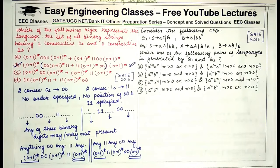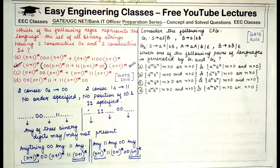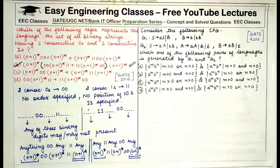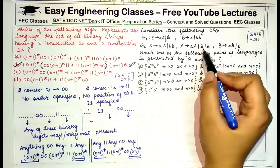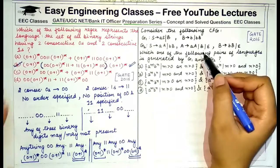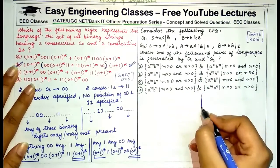Now coming to the second question: consider the following context-free grammar. You are given grammars G1 and G2, each with specified productions. You have to find out which pair of languages is generated by G1 and G2 respectively.